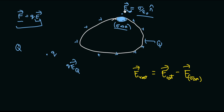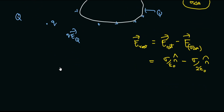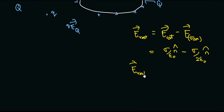When we take out the effect of the patch from the net electric field, we are left with the electric field due to the rest of the charges. The net electric field outside is sigma divided by epsilon naught n̂. If we zoom in on our patch, any point just outside it will see the patch as approximately infinite, so the electric field due to our patch will be sigma divided by 2 epsilon naught n̂. Therefore, the electric field due to the rest of the charges outside the conductor is sigma divided by 2 epsilon naught n̂.